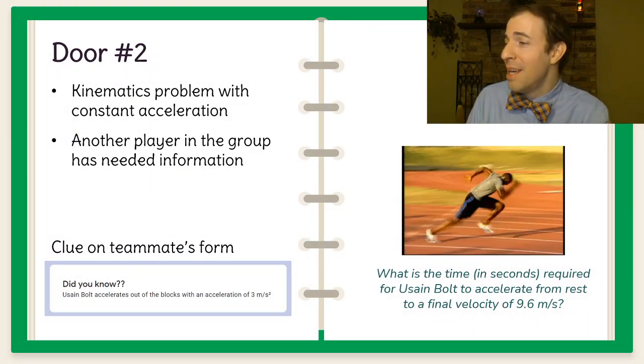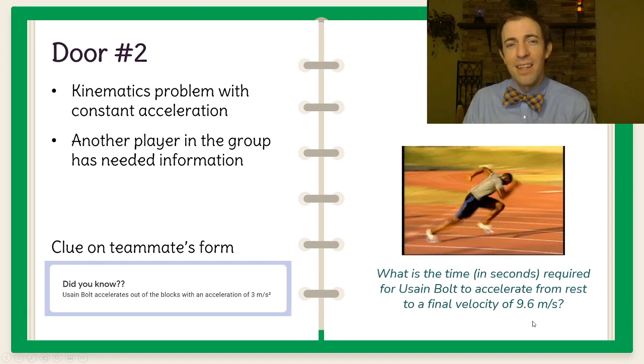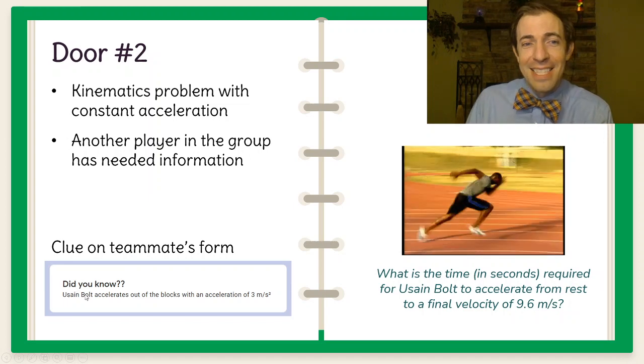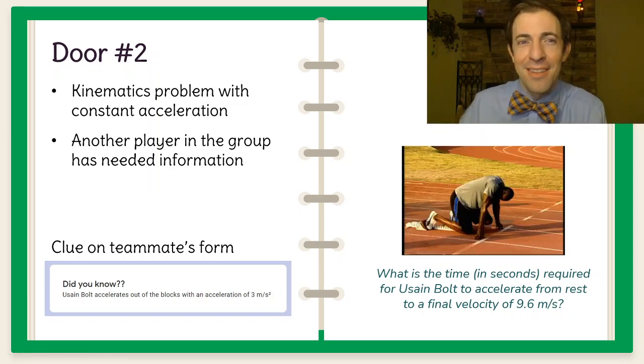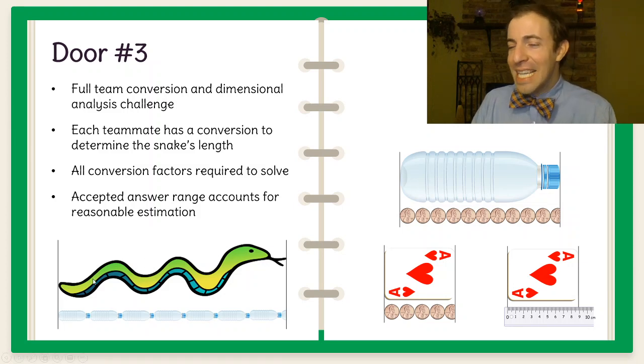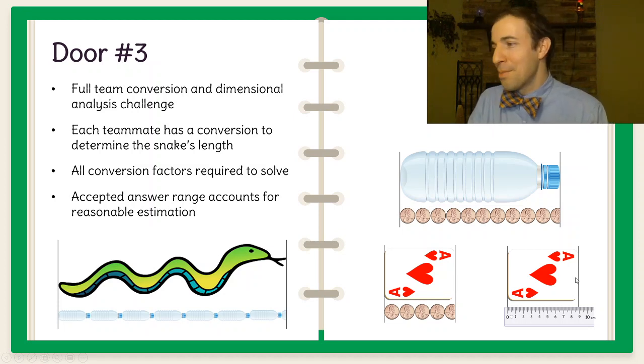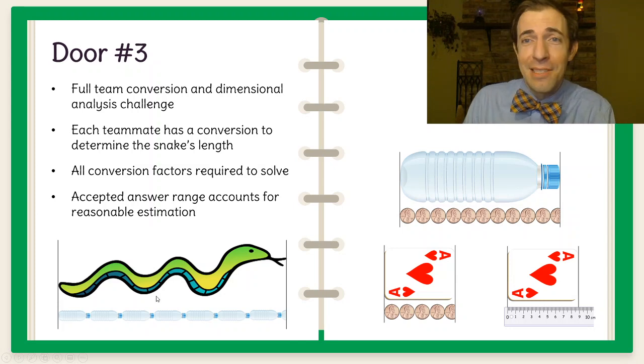But door number two gets a little bit more complex is a kinematics problem calculating the time that it takes Usain Bolt to accelerate to a final velocity of 9.6 meters per second. They don't have all the information that they need to solve that but one of their teammates has a did you know that says Usain Bolt accelerates at three meters per second squared. So they have to figure out which of their teammates has the missing information for them to solve their task to move on to door three. Door three is a lot more collaborative. It's one problem that they're all working on together and in this case they need to figure out the length of this snake in meters but they have different pictures depending on the different player that they are. Player one has the snake compared to water bottles, player two has a water bottle with pennies, player three has pennies and playing card, and then player four has a playing card and a ruler. And they have to work together to create conversion factors and use dimensional analysis to solve for that unknown.